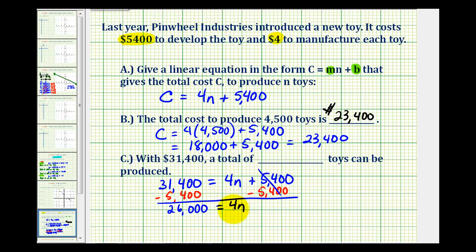So now to solve for N, we'll divide both sides by four. So this would be 6,500 equals, 4 divided by 4 is equal to 1, and 1 times N is N. So if we have this much money, we can make a total of 6,500 toys.